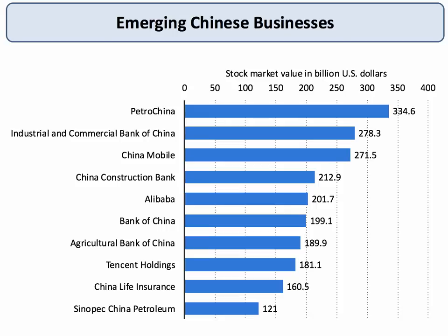If you look at the stock market value of some of these businesses, it really does stack up. PetroChina is the biggest firm, China Mobile is one of the top 10 brands in the world, and Alibaba — one of the world's biggest retail businesses, set up by Jack Ma — is also among them.